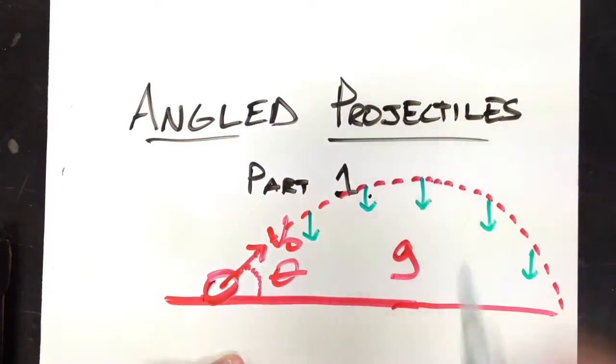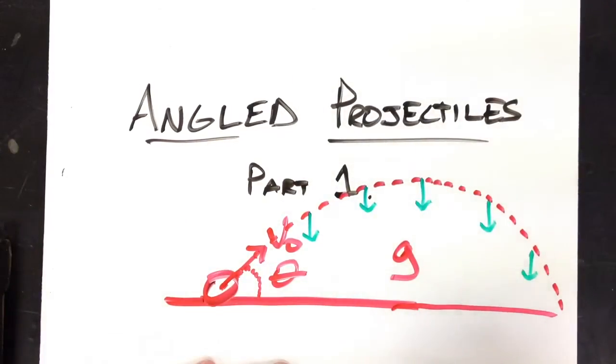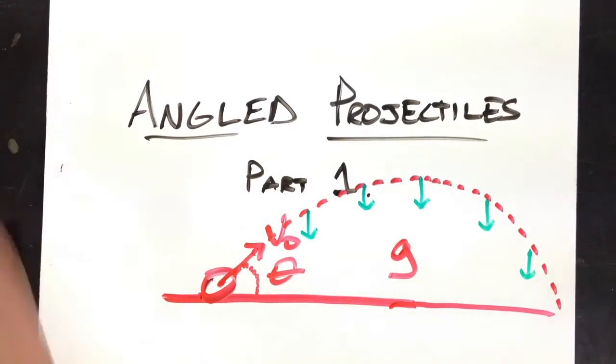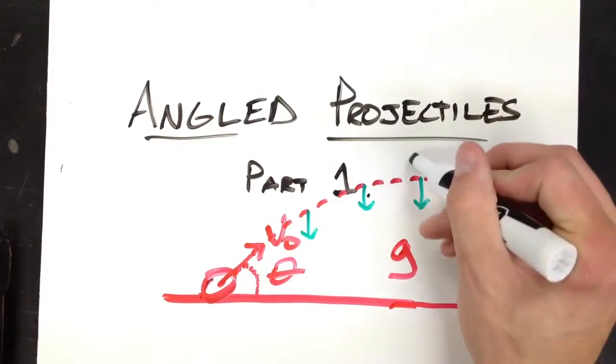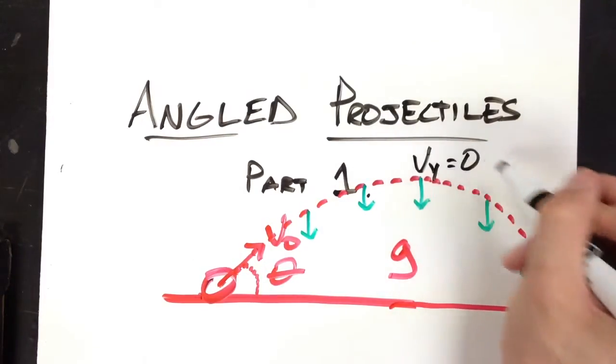So even at the top, that ball has an acceleration that is g. Now, at the top, if you remember problems dealing with max height, at the top, the vy is 0.